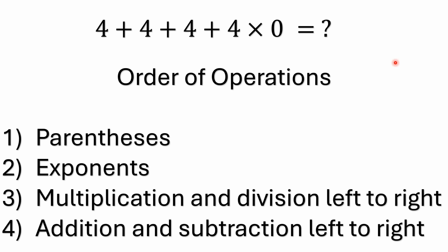We have parentheses and then exponents. A lot of times this is memorized in the form of an acronym known as PEMDAS. However, exponents doesn't really tell you the whole story — there's also things like factorials and square roots. Then the third step, you have multiplication and division left to right. Multiplication and division are equal in precedence, so you just solve them left to right as you find them. And then number four is addition and subtraction left to right.